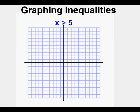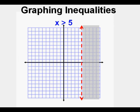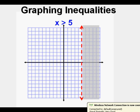When graphing inequalities on a coordinate plane, instead of boundary points we have boundary lines. When using the x variable on a coordinate plane, the boundary lines are vertical lines. Here is x is greater than 5 graphed on the coordinate plane. Note the vertical dashed line at x equals 5, and note that the shaded area is to the right of the line. The shaded area means every point in it is a solution to x is greater than 5. The dashed line means the boundary line itself is not part of the solution.